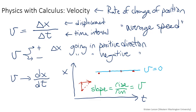How would you get a negative velocity? A negative velocity means that your position is decreasing over time.